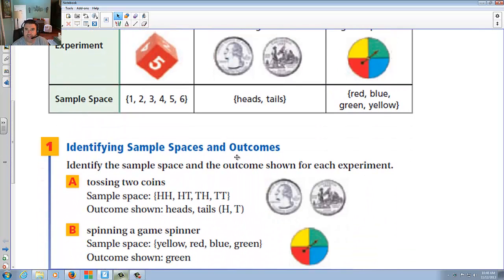Now, identifying sample spaces and outcomes. Identify the sample space and outcomes shown for each experiment, so in case of heads and tails. While I said flipping a coin is heads or tails, if I flip two coins, there are actually four possibilities. I might get heads and heads, tails and tails, heads and tails, or tails and heads. And so there's four possible outcomes, if you will.